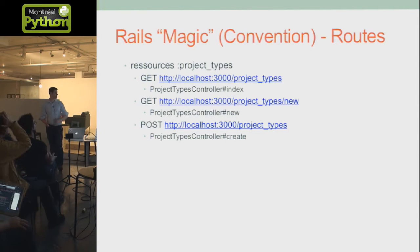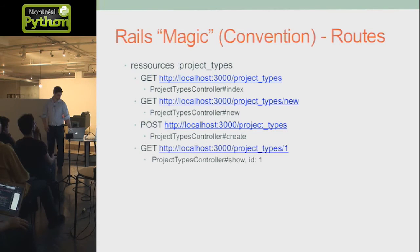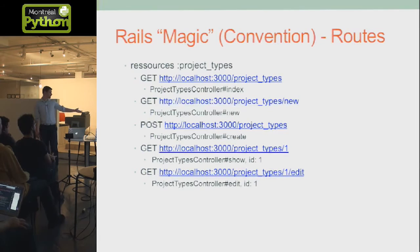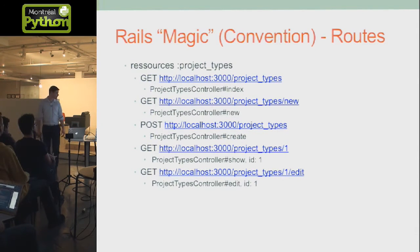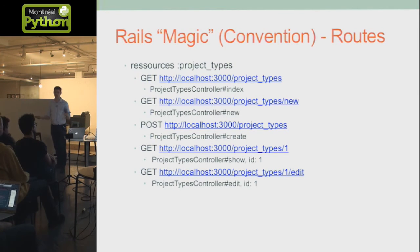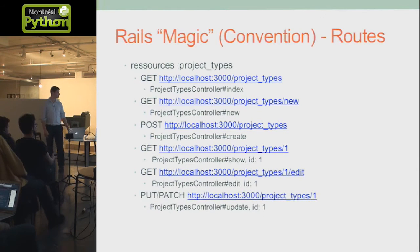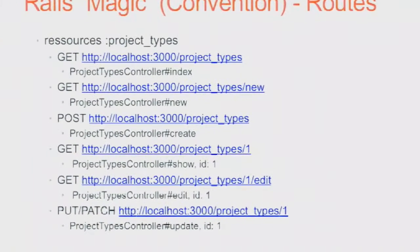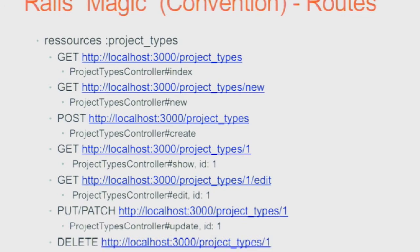POST to project_types means you want to create a new one. GET on /project_types/1 gives you the show view for project type with ID 1. Adding /edit gives you the edit view. If you don't have /edit it's the show. Honestly I don't use the show action very often except for admin/user differentiation — most of the time I use edit. And if you have POST or PATCH on that same path, it will be an update. PUT and PATCH don't exist natively in browsers, so it's a POST request with an extra attribute indicating which one it is. DELETE works the same way.